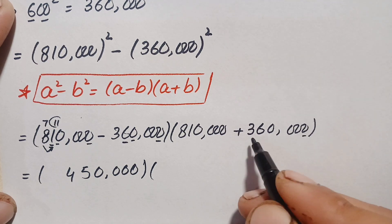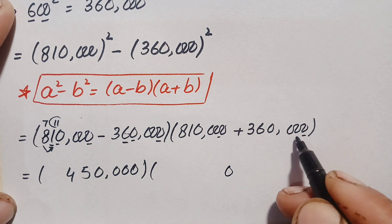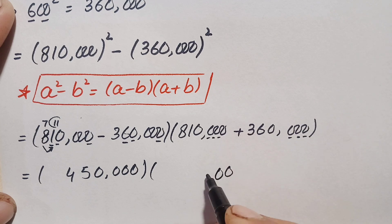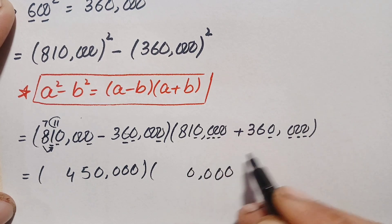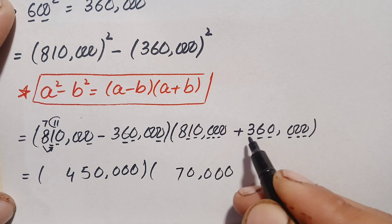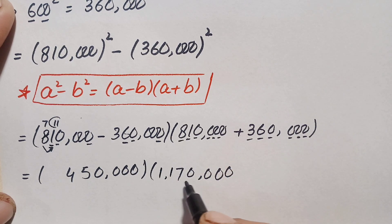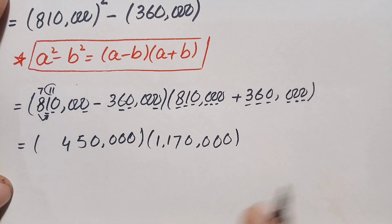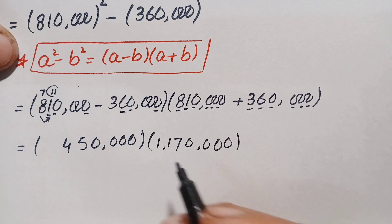Now we add these two numbers, again starting from the rightmost position. Zero plus zero gives four zeros. Then 6 plus 1 is 7, and 3 plus 8 is 11. So the addition gives 1,170,000.